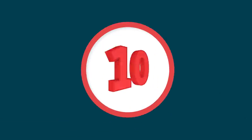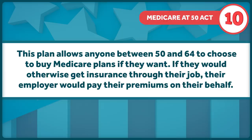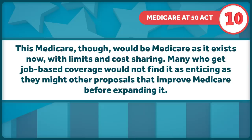The second is Senator Stabenel's Medicare at 50 Act. It allows anyone between the ages of 50 and 64 to choose to buy Medicare plans if they want. If they'd otherwise get insurance through their job, their employer would pay their premiums on their behalf. This Medicare, though, would be Medicare as it exists now, with limits and cost-sharing. So many who get their job-based coverage would not find it as enticing as they might other proposals that improve Medicare before expanding it.